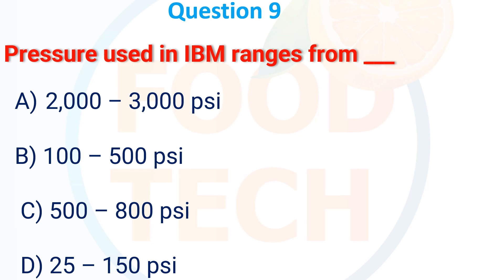Pressure used in IBM (Injection Blow Molding) ranges from: (a) 2000 to 3000 psi, (b) 100 to 500 psi, (c) 500 to 800 psi, (d) 25 to 150 psi. The answer is (a) 2000 to 3000 psi.